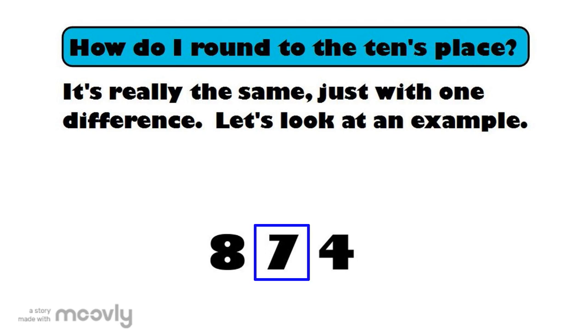Next, cross out all the numbers behind, in this case the four, and turn it into a zero. The difference is any number in front of the box is going to stay the same. So, just pull the eight up. So, right now you're looking at eight and a zero.